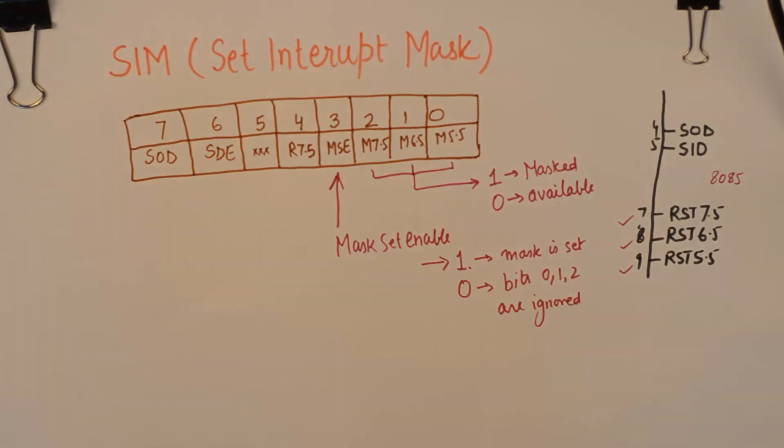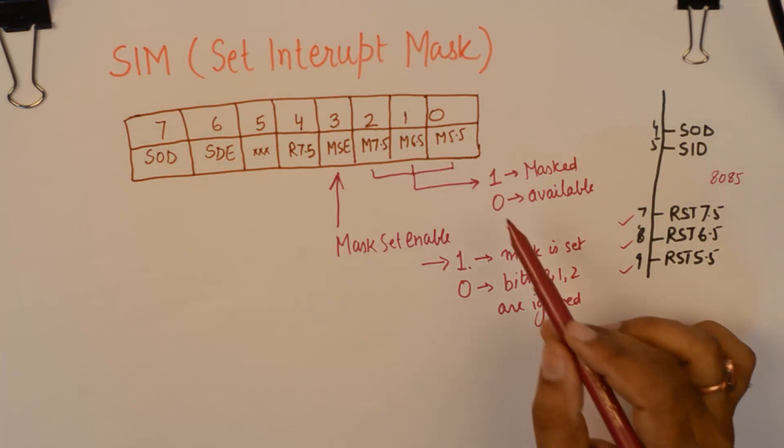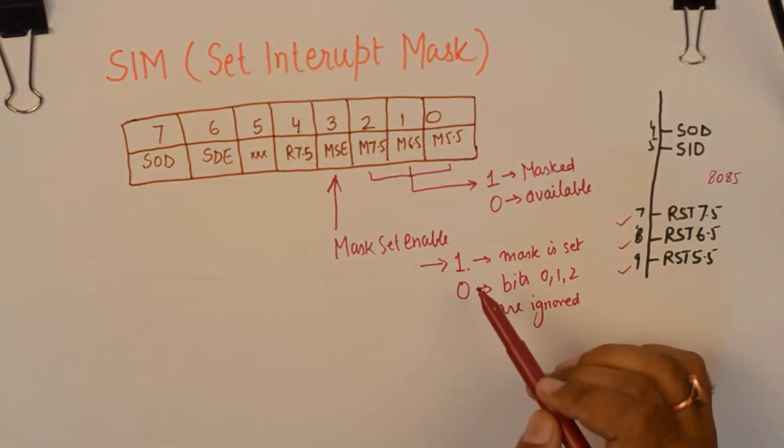Now, there is one very important question. Where do you make these bits 1s and 0s? You make these bits 1s and 0s in the accumulator and then run the SIM instruction.